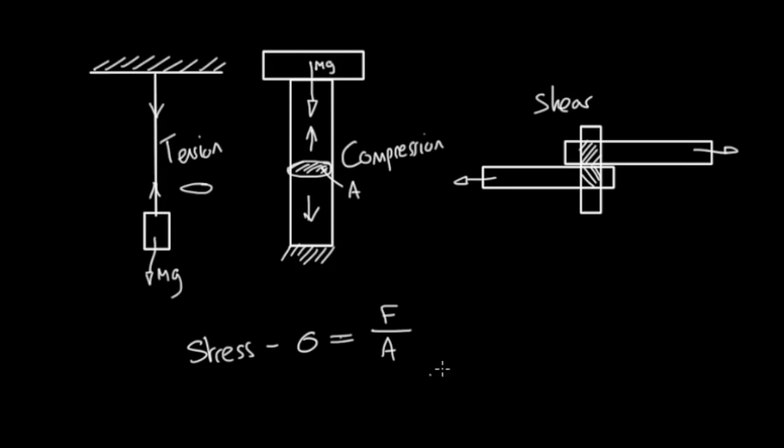With shear stress, it's a different symbol. It's the symbol tau. And again that's equal to the ratio of the force to the area. But this time it's the area parallel to the forces. So it's this area here, the cross sectional area of that nail parallel to the direction of the force.